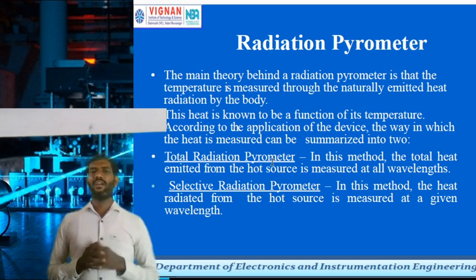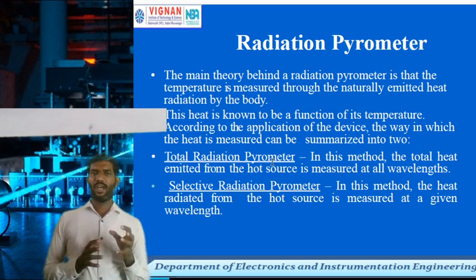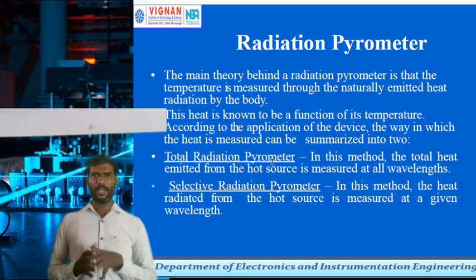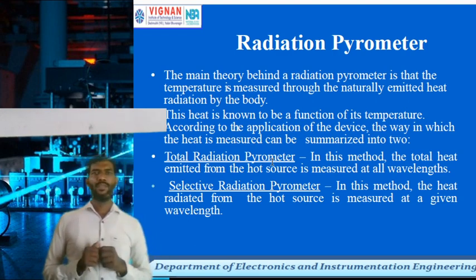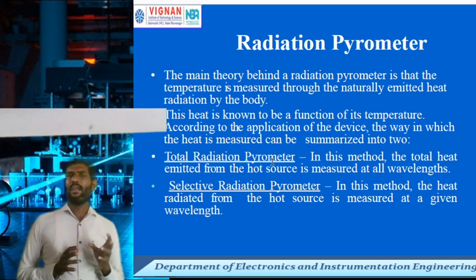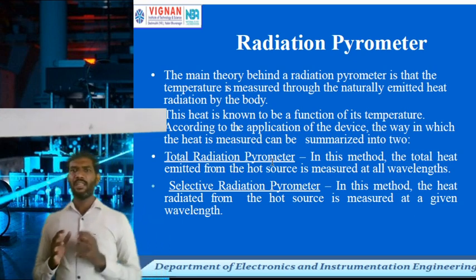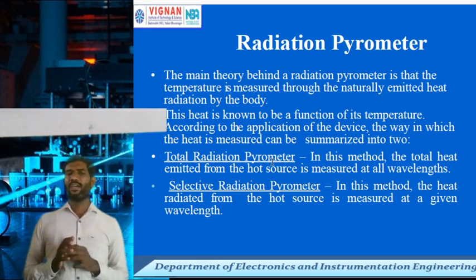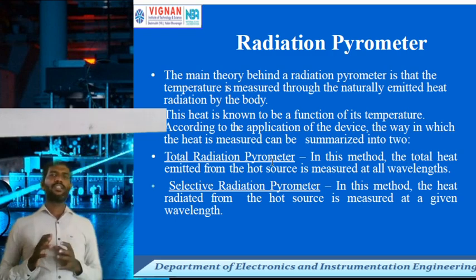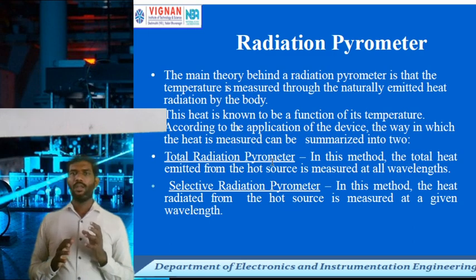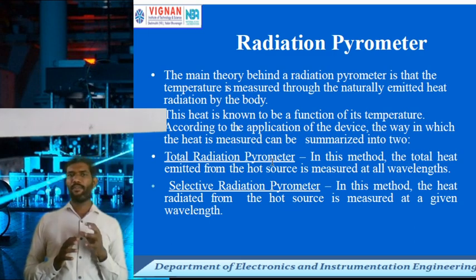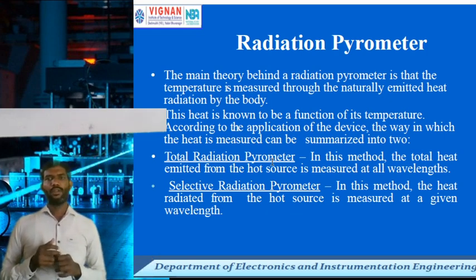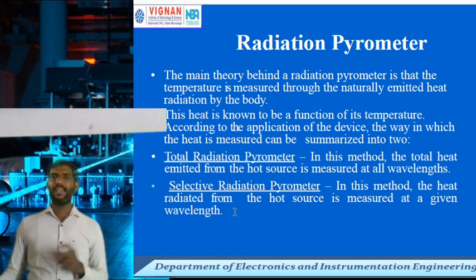Next is the radiation pyrometer, which is very important and also used in blast furnace temperature measurement. The radiation pyrometer measures temperature through the naturally emitted heat radiation by the body, where heat is a function of temperature. According to the application, the way heat is measured can be summarized into two methods: total radiation power pyrometer and selective radiation pyrometer. The total radiation pyrometer measures all heat emitted from the heated source at all wavelengths, whereas the selective radiation pyrometer measures heat from the source at a given wavelength.